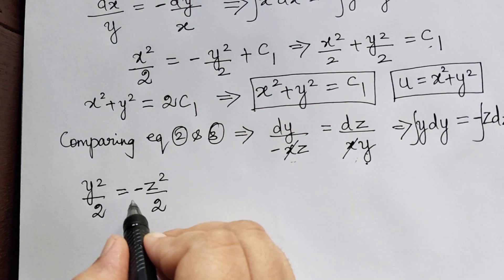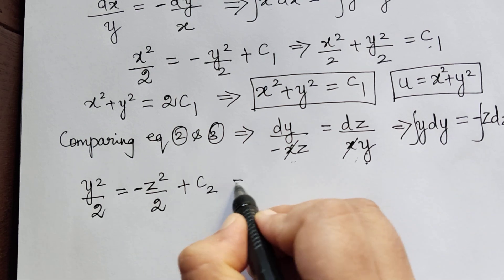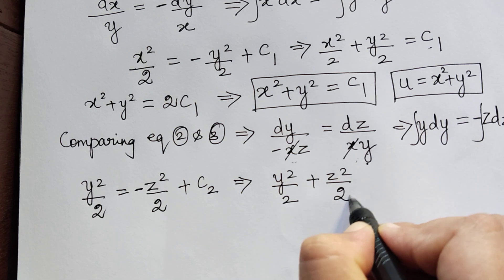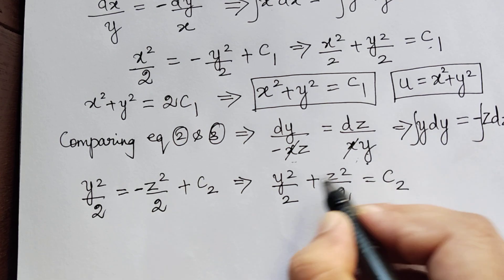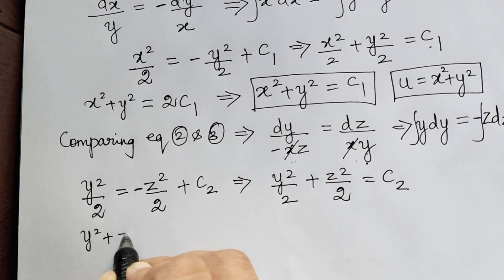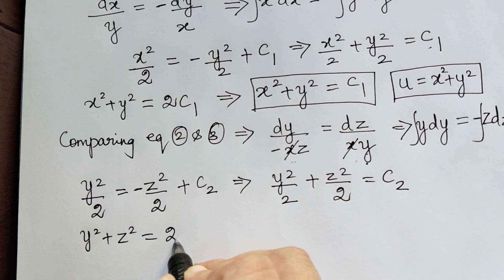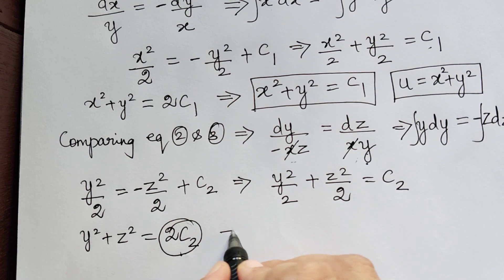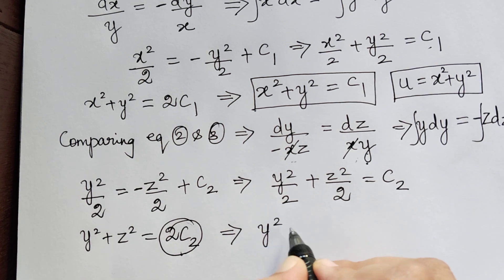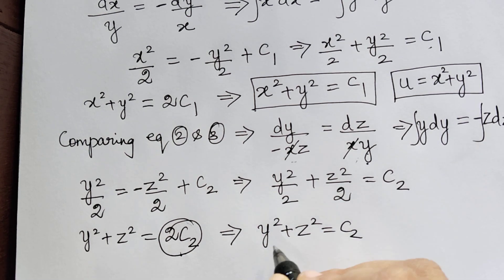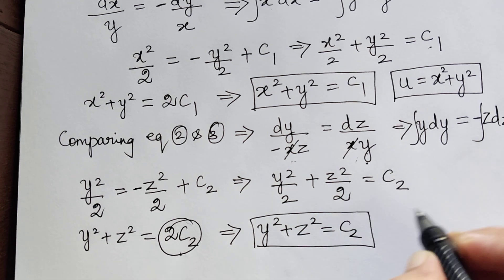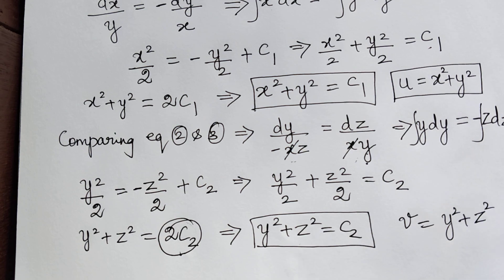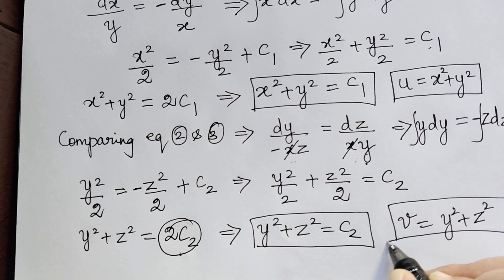So, y squared over 2 plus z squared over 2 equals c2. Taking the LCM, y squared plus z squared equals 2c2. Since 2c2 is again a constant, we replace it with c2 itself. Therefore, y squared plus z squared equals c2 is the second solution, and the solution v is equal to y squared plus z squared.